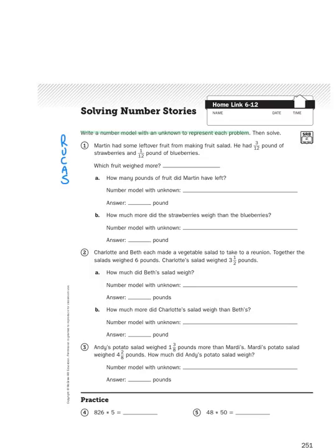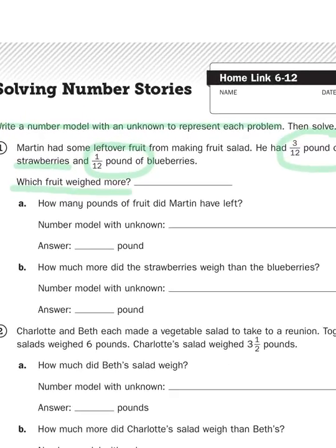Martin had some leftover fruit from making fruit salad. He had three-twelfths of a pound of strawberries and one-twelfth of a pound of blueberries. Which fruit weighed more? So my first question to solve is just a comparison one. Which is bigger, three-twelfths or one-twelfth? Well, three is bigger than one, so it's three-twelfths pound of strawberries. So in the space down here, I'm just going to write strawberries.